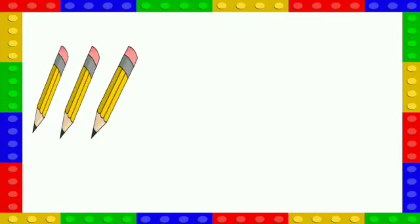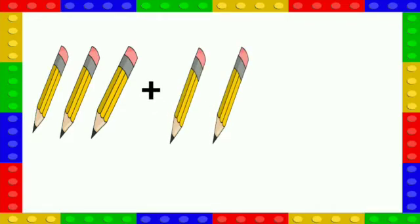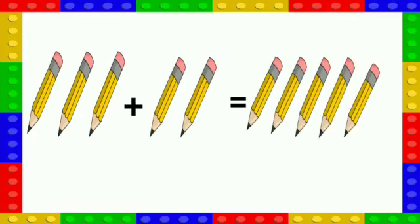Three pencils plus two pencils. How many pencils are all together? One, two, three, four, five. Three plus two is equal to five.